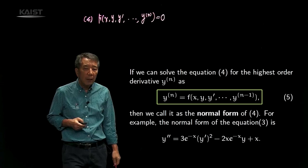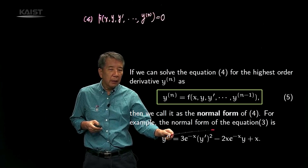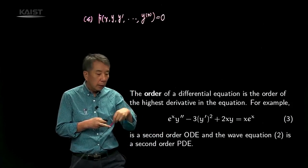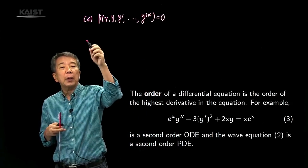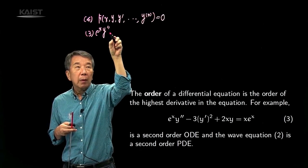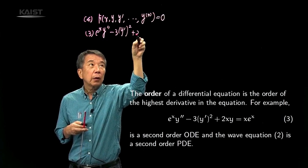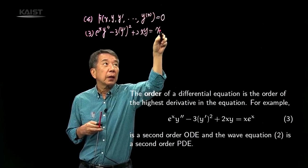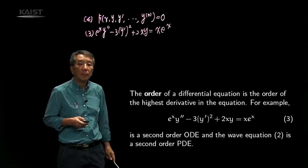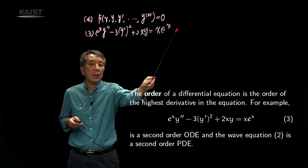For example, let's consider equation number 3 again: e to the x times y double prime minus 3 times y prime squared plus 2xy equals x times e to the x. We know that this is a second order ordinary differential equation.